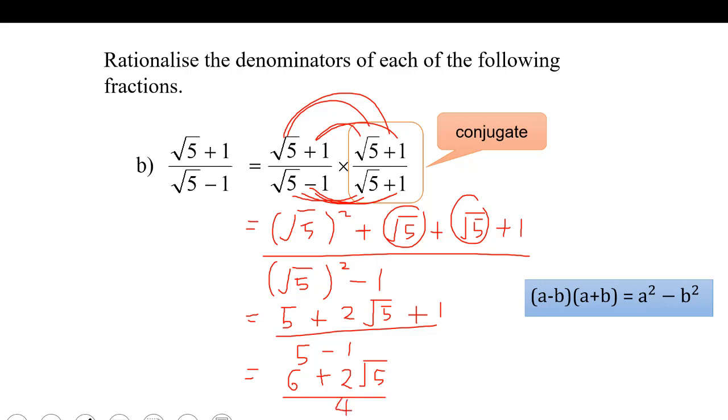So if we notice, 6, 4, and 2 and 4 here can be simplified. We can factorize 2 out.